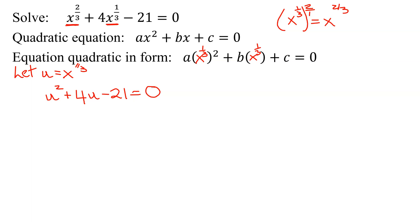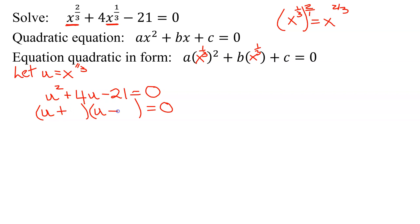Now this looks very familiar — it's an easy factoring. The coefficient of u squared is 1. Multiply to get u squared, I need a u and a u. My two numbers multiply to a negative, so I have to have opposite signs. They multiply to negative 21 and add to 4. After a little bit of thought, it becomes 7 and 3, with 7 being positive and 3 being negative.